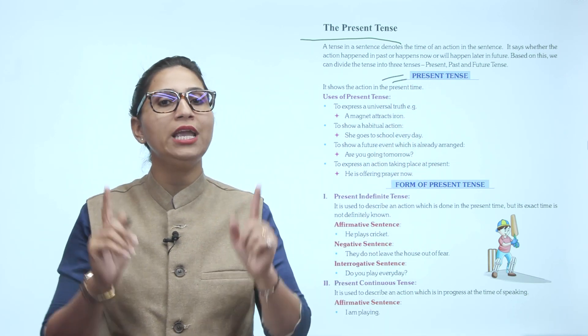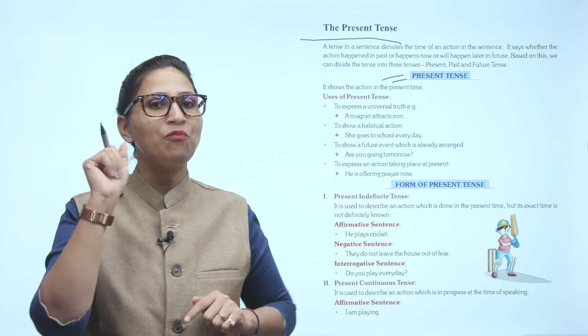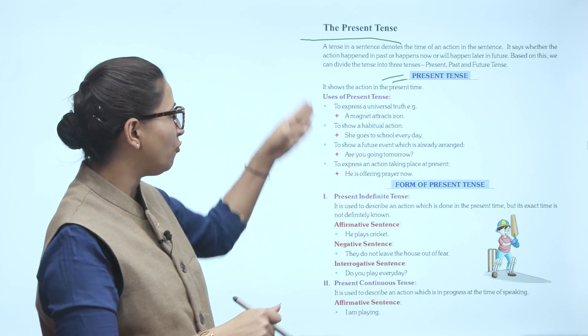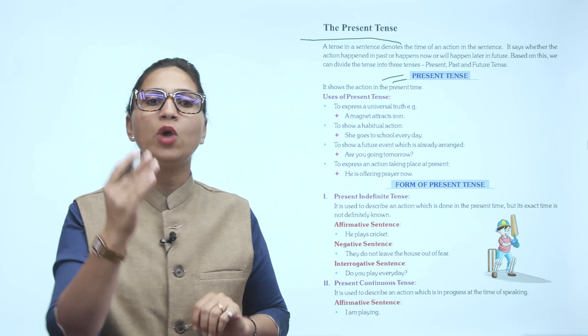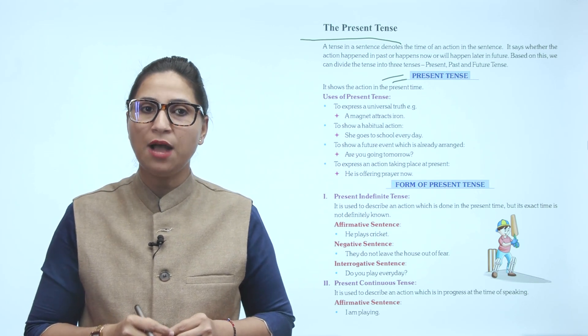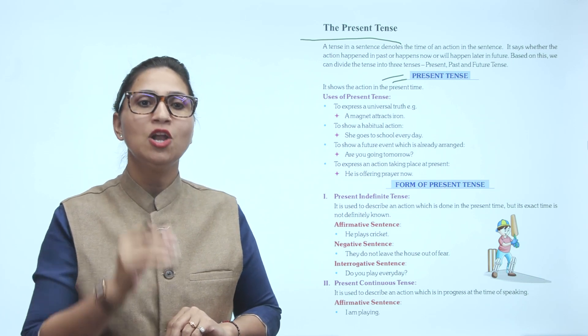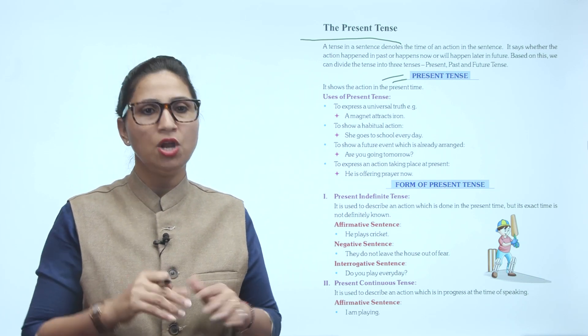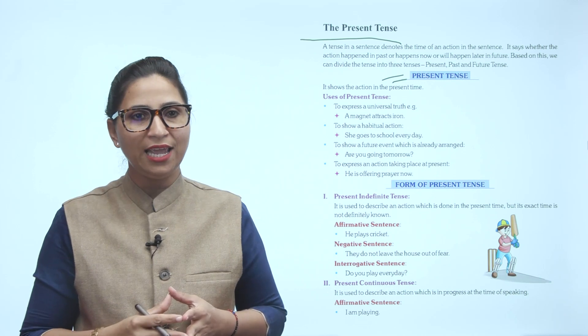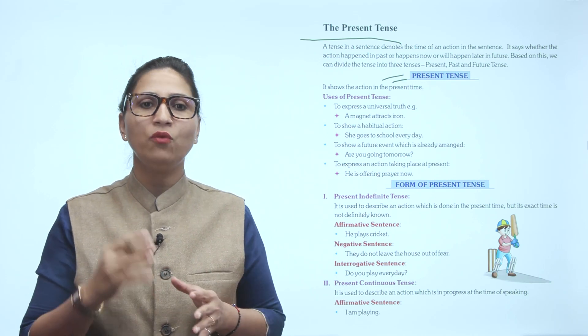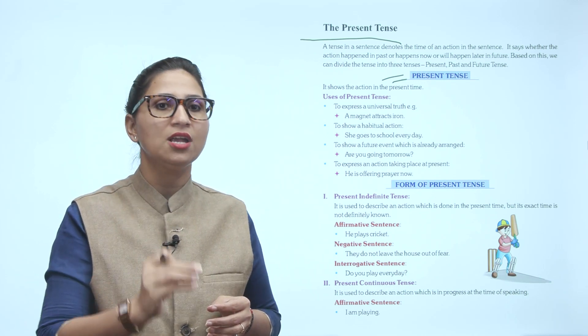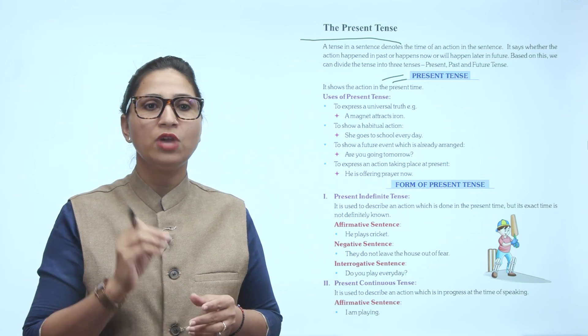Present tense is used to show action in the present time. Here are some uses of present tense. First is to express a universal truth, example: a magnet attracts iron. Second, to show a habitual action: she goes to school every day.